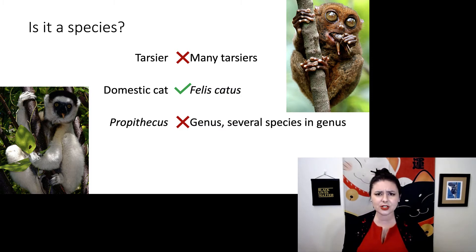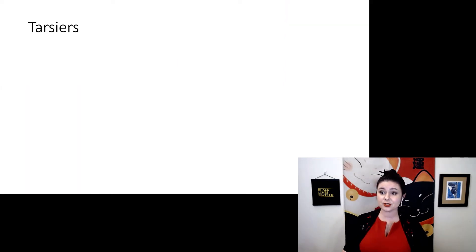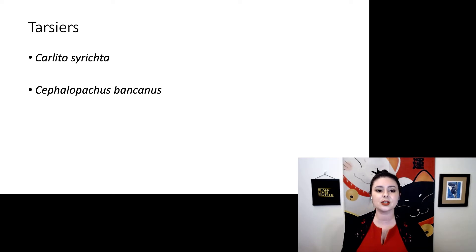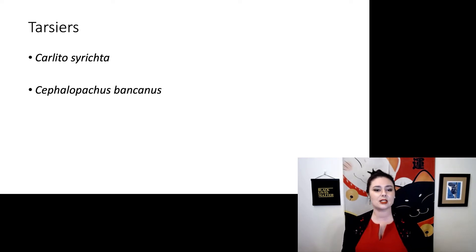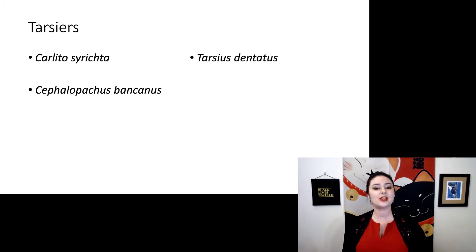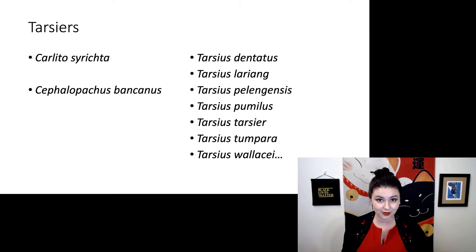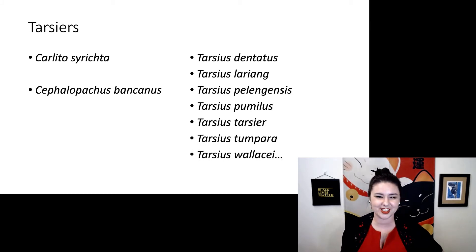Let's look at some of these examples in more depth — first, tarsiers. You might notice there are actually three different genera. We have Carlito, which has only one species: Carlito syrichta. Then we have genus Cephalopachus, again with one species: Cephalopachus bancanus. But then in genus Tarsius, we have at least 12 species that have been named so far — I didn't even bother to put them all on the screen.